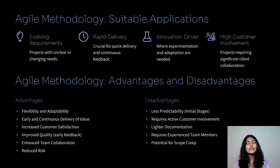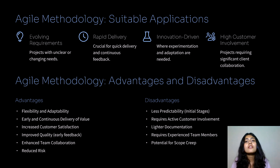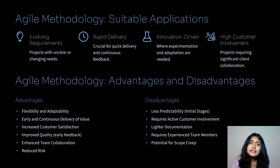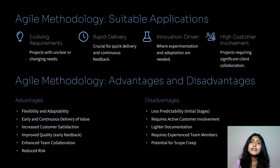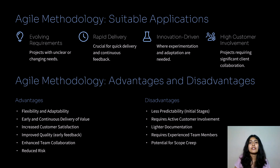Application of agile: requirements can be changed, updated, and removed. Early and rapid delivery of the product keeps happening in each iteration, so the product is continuously delivered. You get feedback to improve the product, and constant interaction between teammates and collaboration with clients keeps happening. Advantages: it is very flexible — requirements can be changed and updated at any time. Early and continuous delivery means you keep getting feedback at each iteration, and because of that feedback, the quality of the product improves.